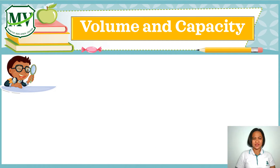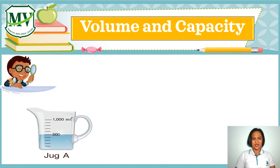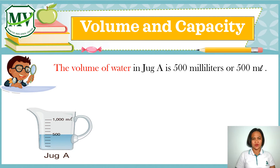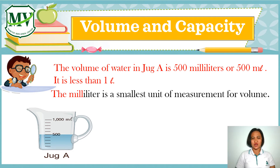The capacity of Jug A is 1,000 milliliters. The volume of the water in Jug A is 500 milliliters, or 500 ml. It is less than 1 liter. The milliliter is the smallest unit of measurement for volume. We can write L for liter and ml for milliliter.